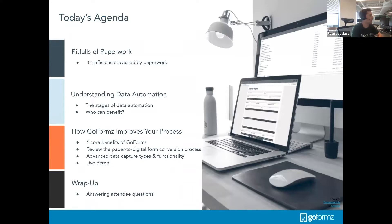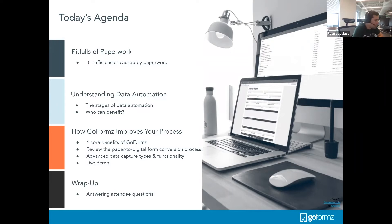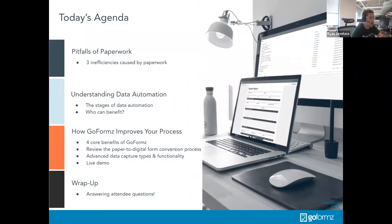Today's agenda will cover the pitfalls of paperwork and three inefficiencies caused by paperwork. We'll then move into understanding data automation — the stages of data automation and who can benefit. Next, we'll cover how GoForms improves your process, the paper-to-digital form conversion process, the different field types we can capture data with, and a live demonstration. We'll finish by answering questions.